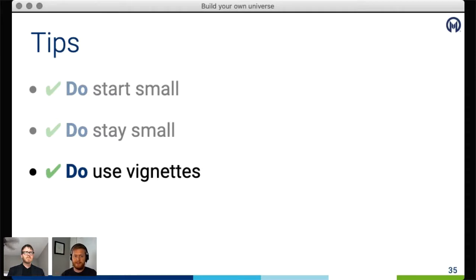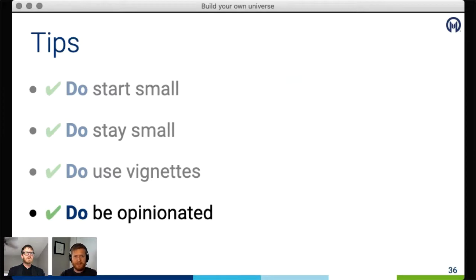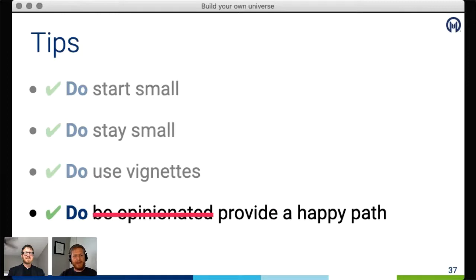My next tip is to use vignettes. Vignettes are a great way to document and share processes that aren't easily captured in a single function or even in raw code — I've used vignettes to document database driver setup and configuration, or to show how you would accomplish a whole end-to-end analysis from start to finish. And finally: provide a happy path. Consider that your users are likely used to a range of workflows, so help them fall into a pit of success by making sure the happy path is as smooth and bump-free as possible.